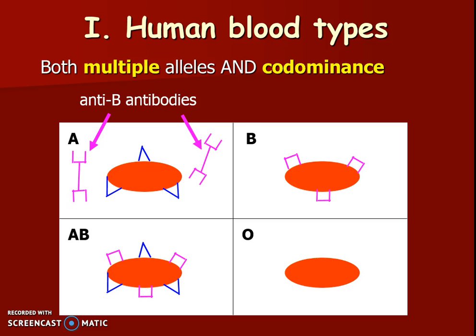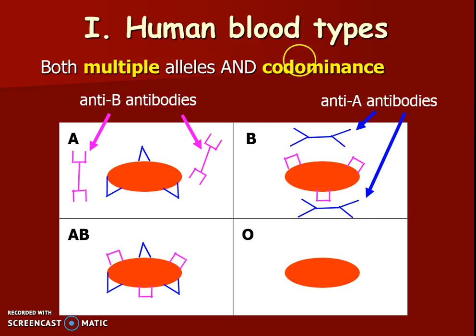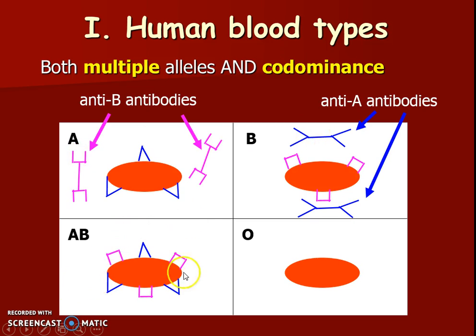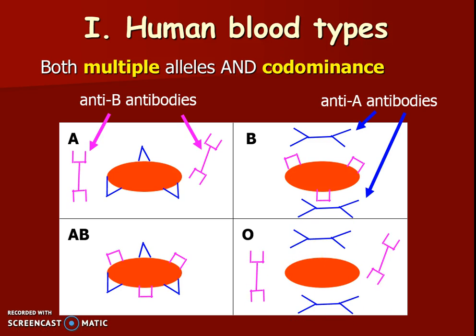That relates to what we'll learn more about in class regarding transfusions. For blood type B, there are anti-A antibodies, because we can't have any A or AB blood type show up — otherwise it's not self. For blood type AB, there are no antibodies, because we can't have either anti-A or anti-B — otherwise we'd react to ourselves. For blood type O, we actually have both antibodies, because whether a cell has an A or B protein, all of those are not self.